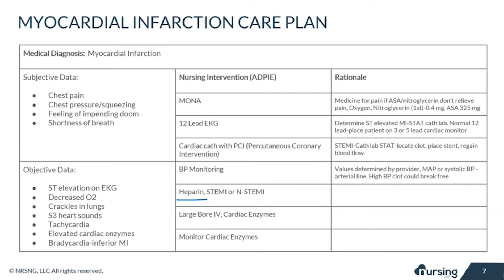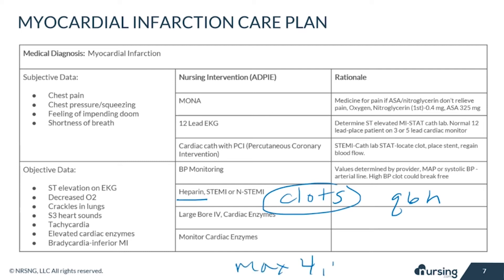Heparin is an important intervention as it is an anticoagulant that breaks up and prevents clots. PTT needs to be monitored every six hours to adjust the dose and keep levels therapeutic. For a STEMI, give a 60 units/kg bolus with a max of 4,000 units, then a continuous infusion of 12 units/kg/hour. For a non-STEMI, give a 60–70 units/kg bolus with a max of 5,000 units, then 12–15 units/kg/hour. Always follow your facility's protocol.